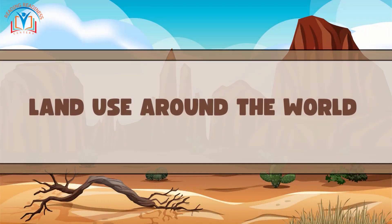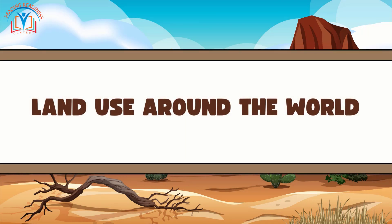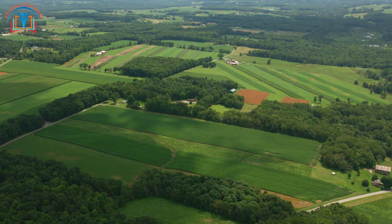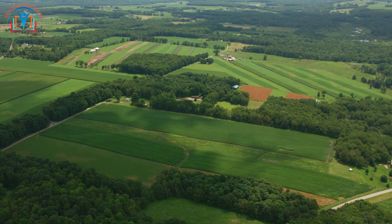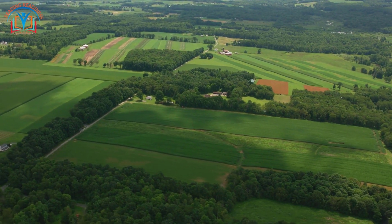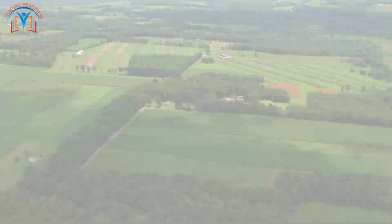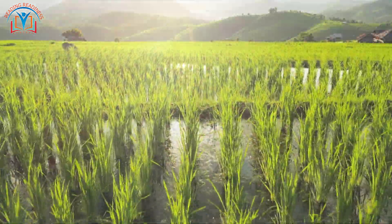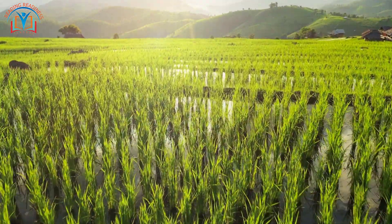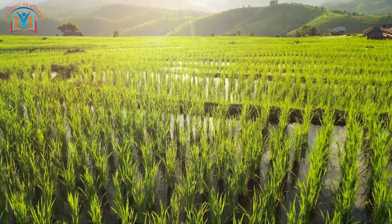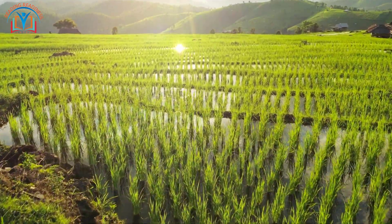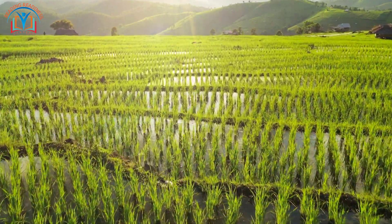Land use around the world: land use varies around the world depending on the climate, the physical features of the land, and the needs of the people. For example, in many parts of Africa, the land is used for agriculture. This is because the climate is warm and there is a lot of land that is suitable for farming.